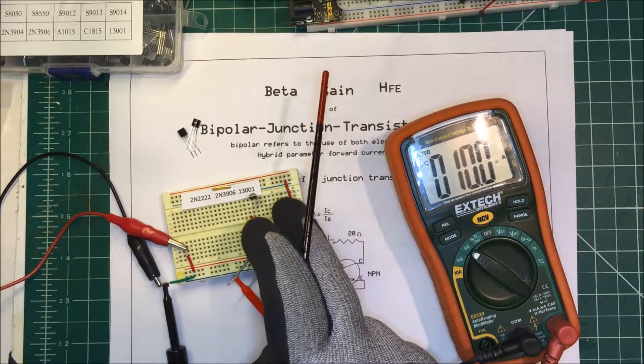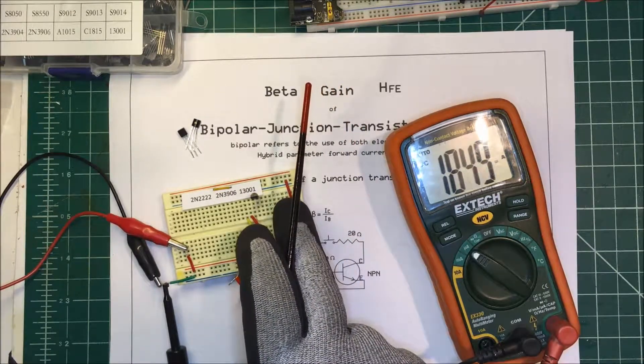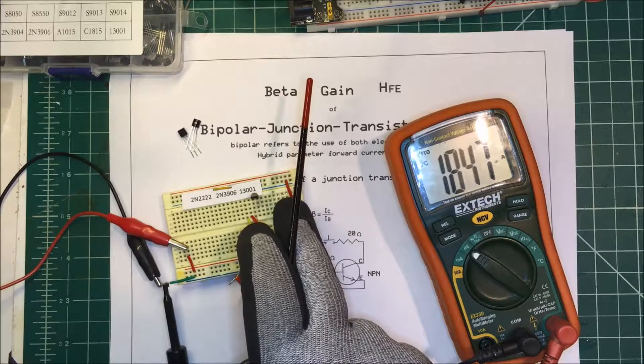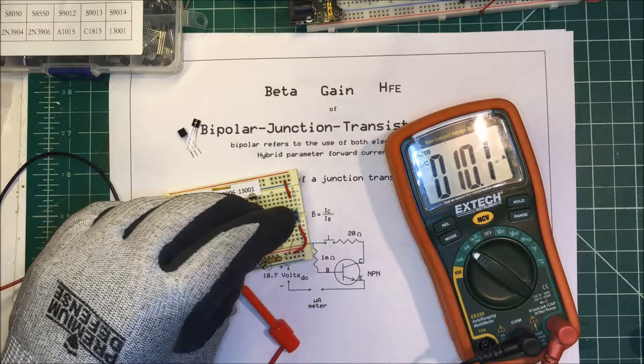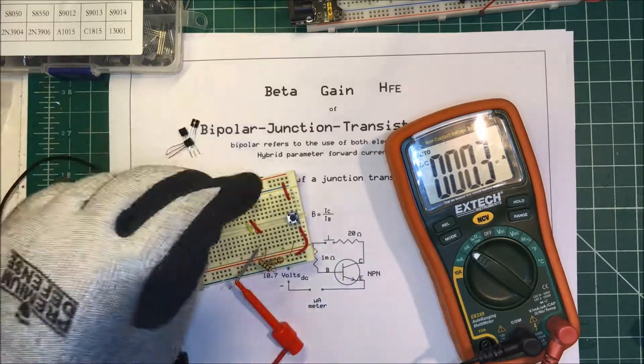This one's a 2N3906. 10 microamps, and that's going to be 185. The gain on that one.